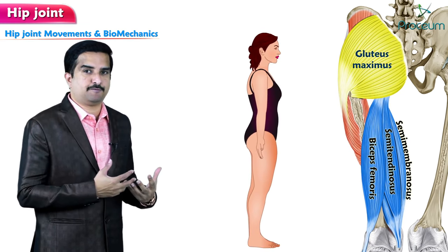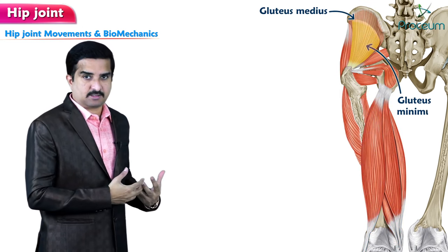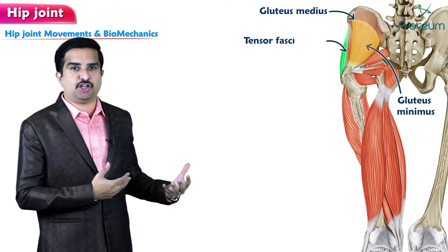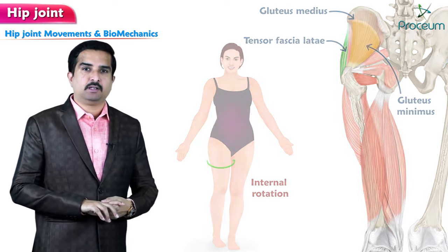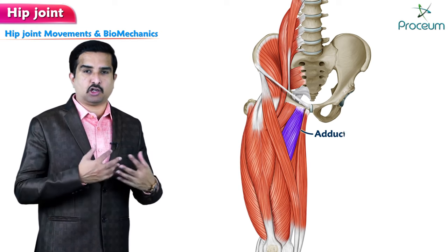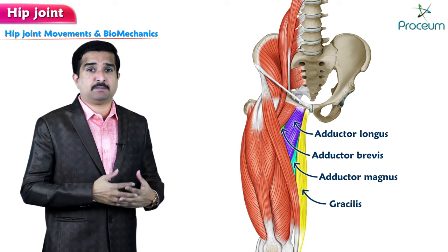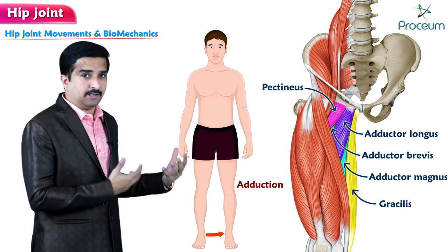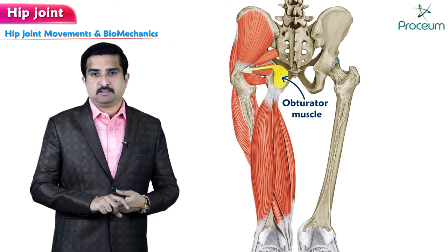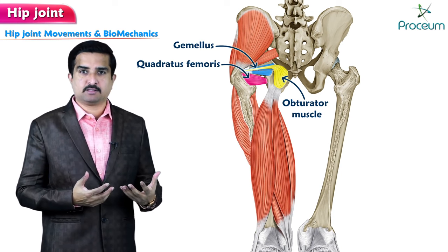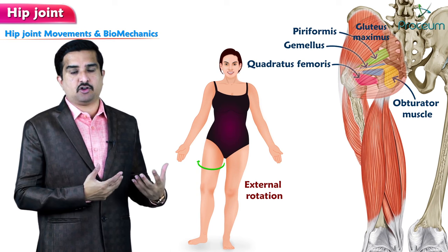The gluteus medius, gluteus minimus, and tensor fasciae latae allow for abduction and internal rotation of the hip. The adductors — adductor longus, adductor brevis, and adductor magnus — along with the gracilis and pectineus, allow for adduction of the hip joint. The muscles responsible for external rotation include the obturator muscles, gemellus, quadratus femoris, gluteus maximus, and piriformis.